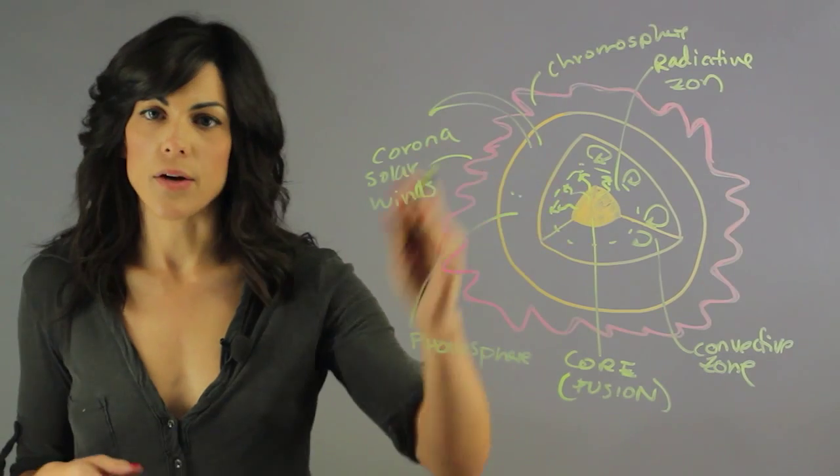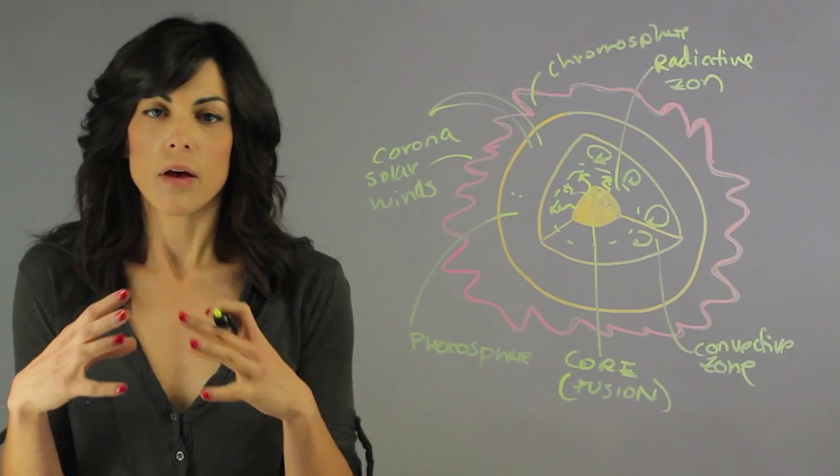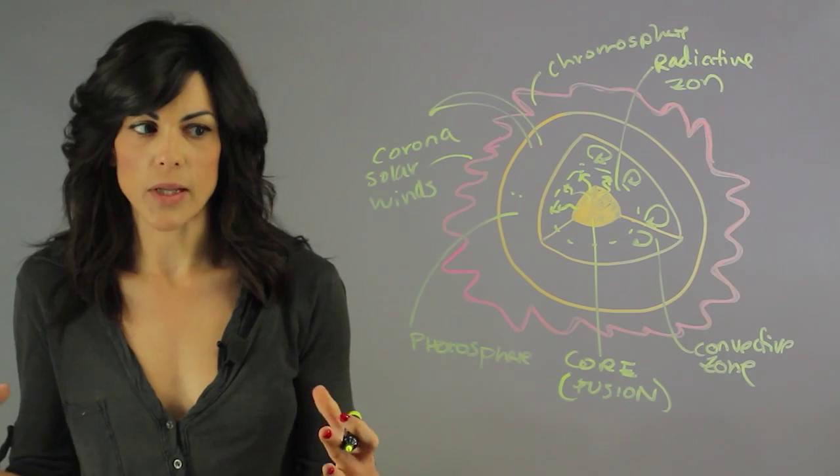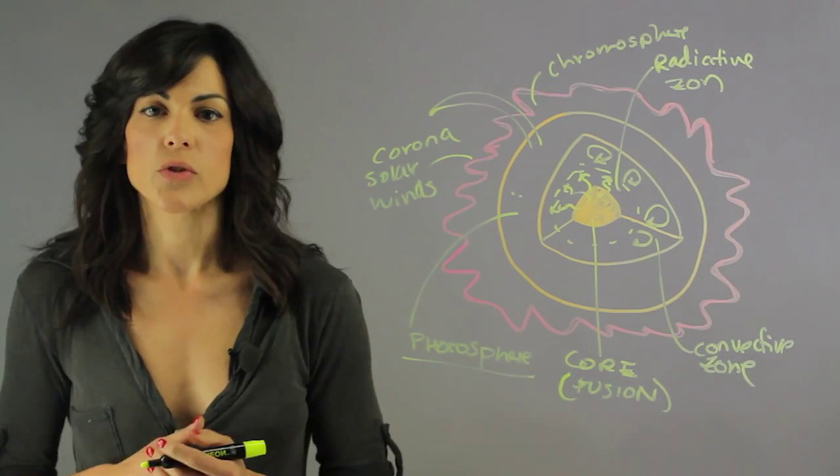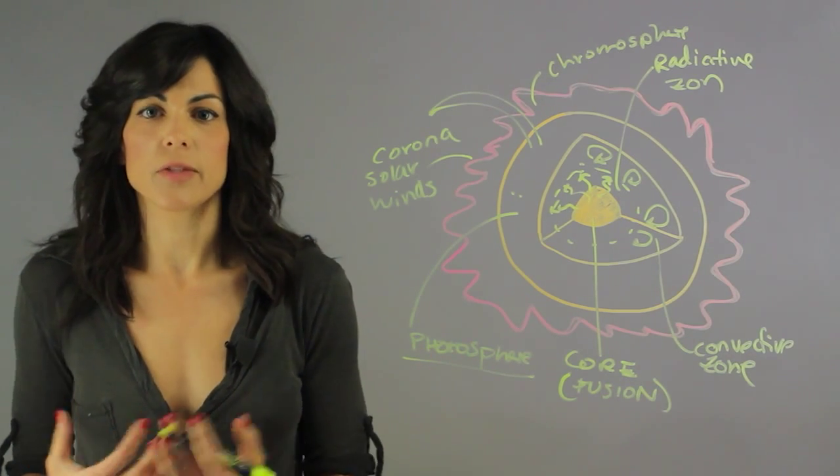Now the layer of the Sun where it goes from being an opaque object to emitting visible light is the photosphere. So this is the layer of the Sun where we get the visible light from.